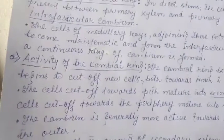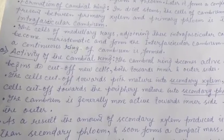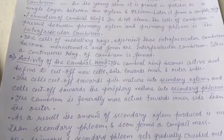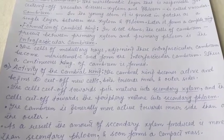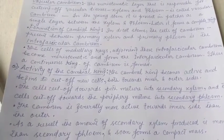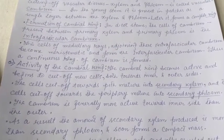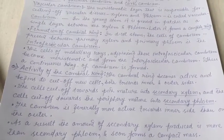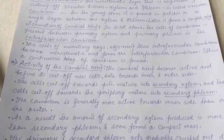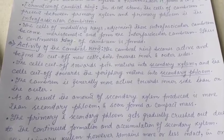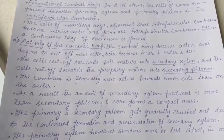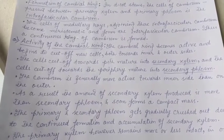The cambium ring becomes active and begins to cut off new cells both towards the inner and outer sides. The cells cut off towards the pith mature into secondary xylem, and the cells cut off towards the periphery mature into secondary phloem. The cambium is generally more active towards the inner side than on the outer side, and as a result the amount of secondary xylem produced is more than the secondary phloem.